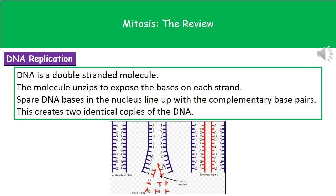The first thing that's going to happen is that the double-stranded DNA molecule is going to unzip and expose the bases on each strand. Then spare DNA bases come in and line up in their complementary base pairs — that's A with T and C with G. Once that's happened all the way along, we have two exact copies of our parent strand, giving us our replicated DNA.